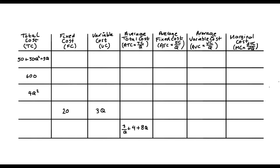Let's think about our first example, where our total cost function is 50 + 50Q² + 3Q. Our fixed cost is going to be that part of our total cost function that doesn't depend on the quantity that the firm produces — so any constant or any term that's not multiplied or divided by our Q variable. In this case, it's just going to be 50. To find variable costs, we look for any term or terms in our total cost function whose value does change with the level of production — any term that's multiplied or divided by our quantity variable Q. So in this example, it's 50Q² + 3Q.